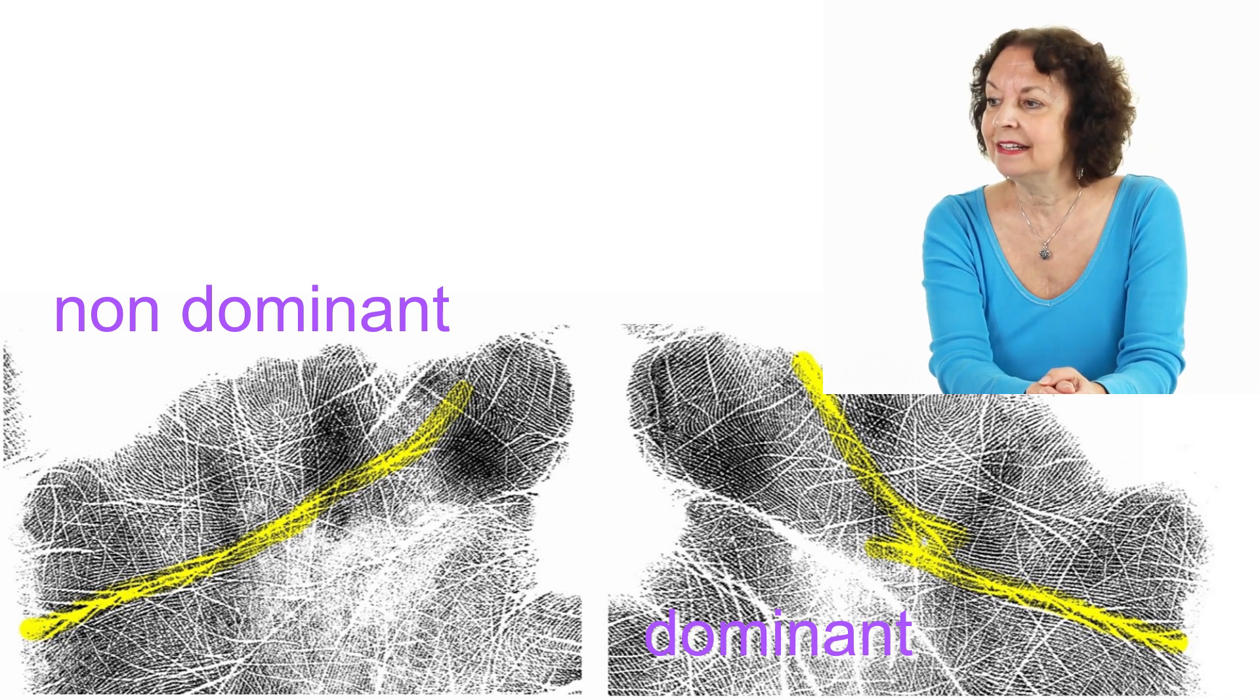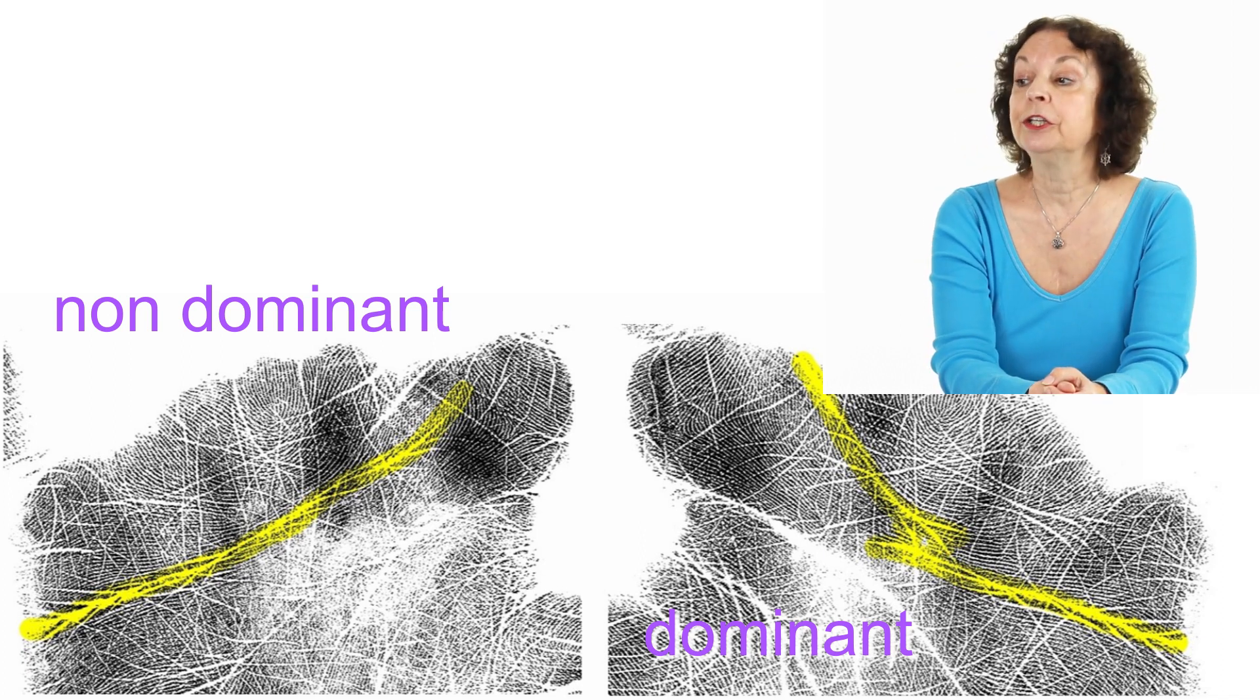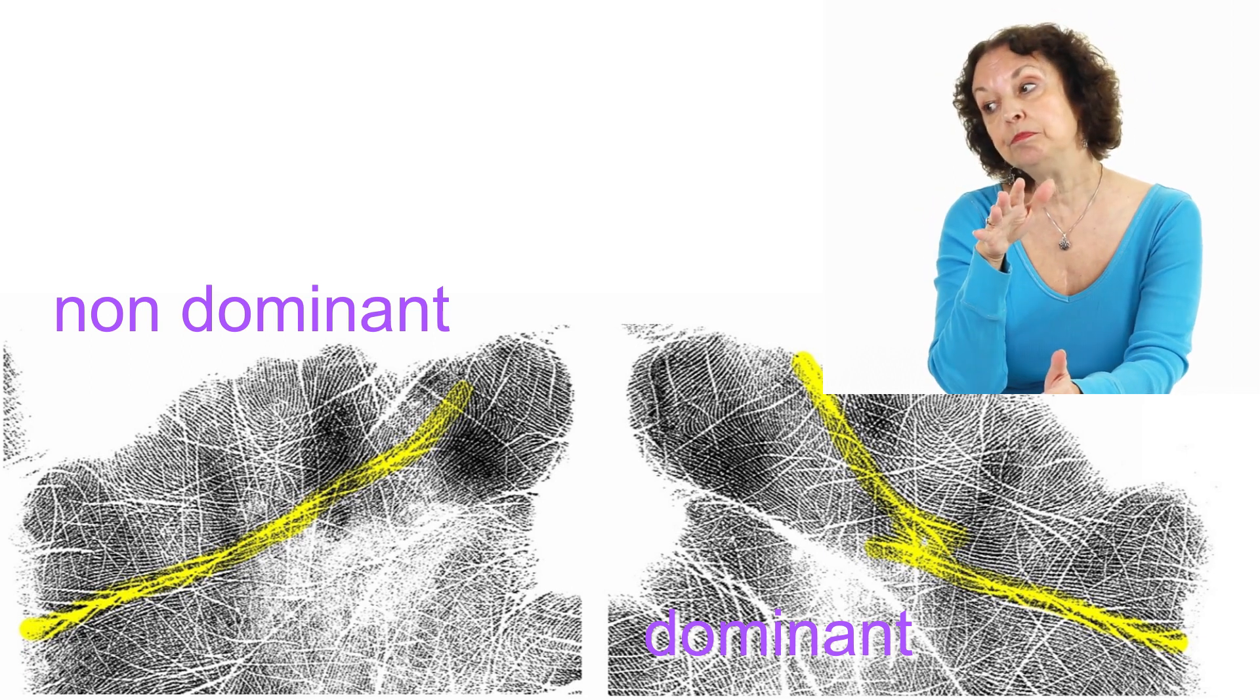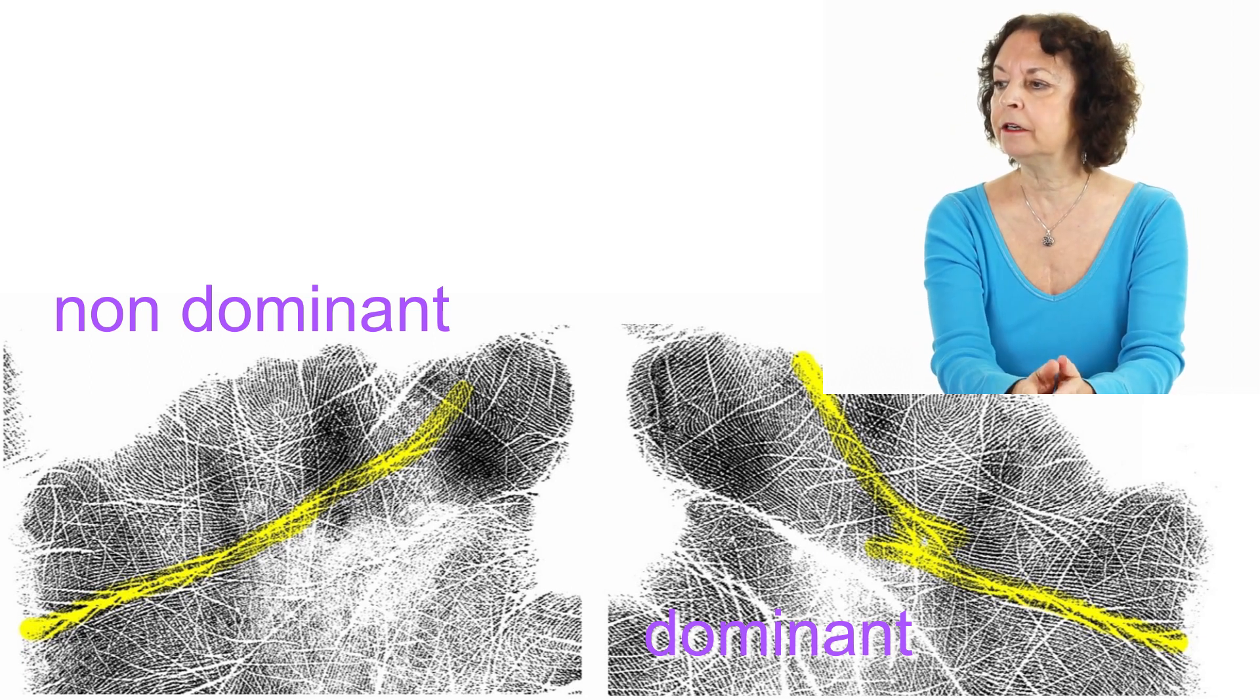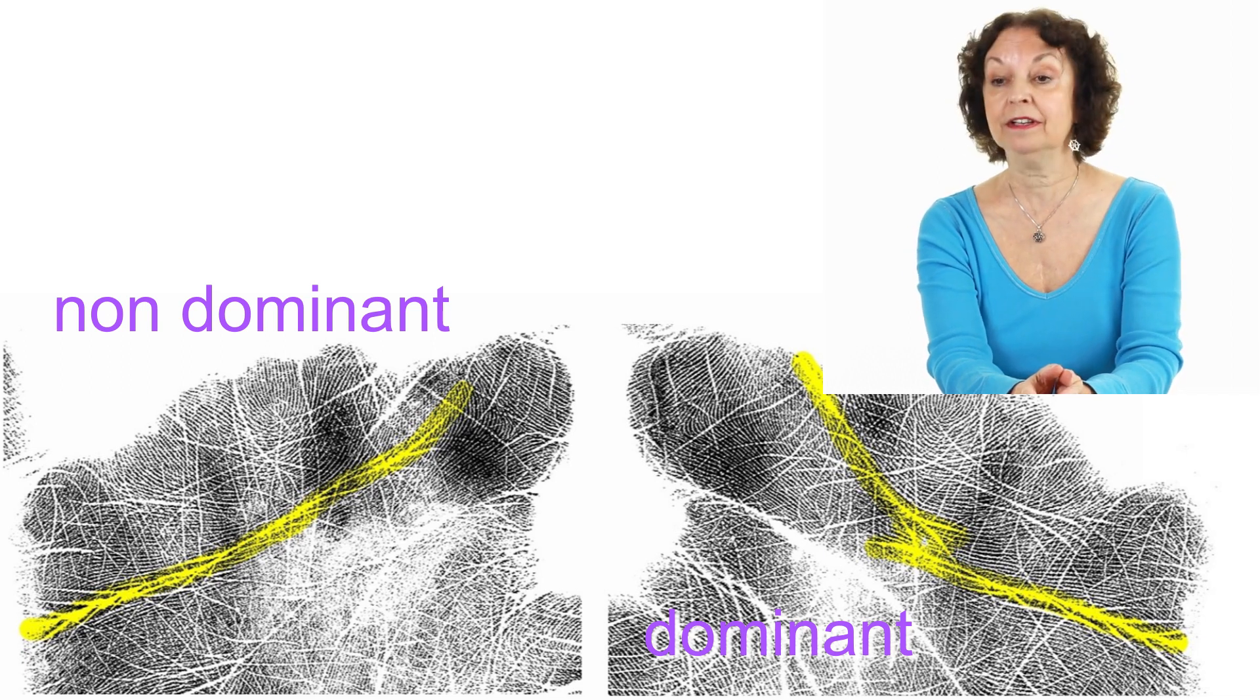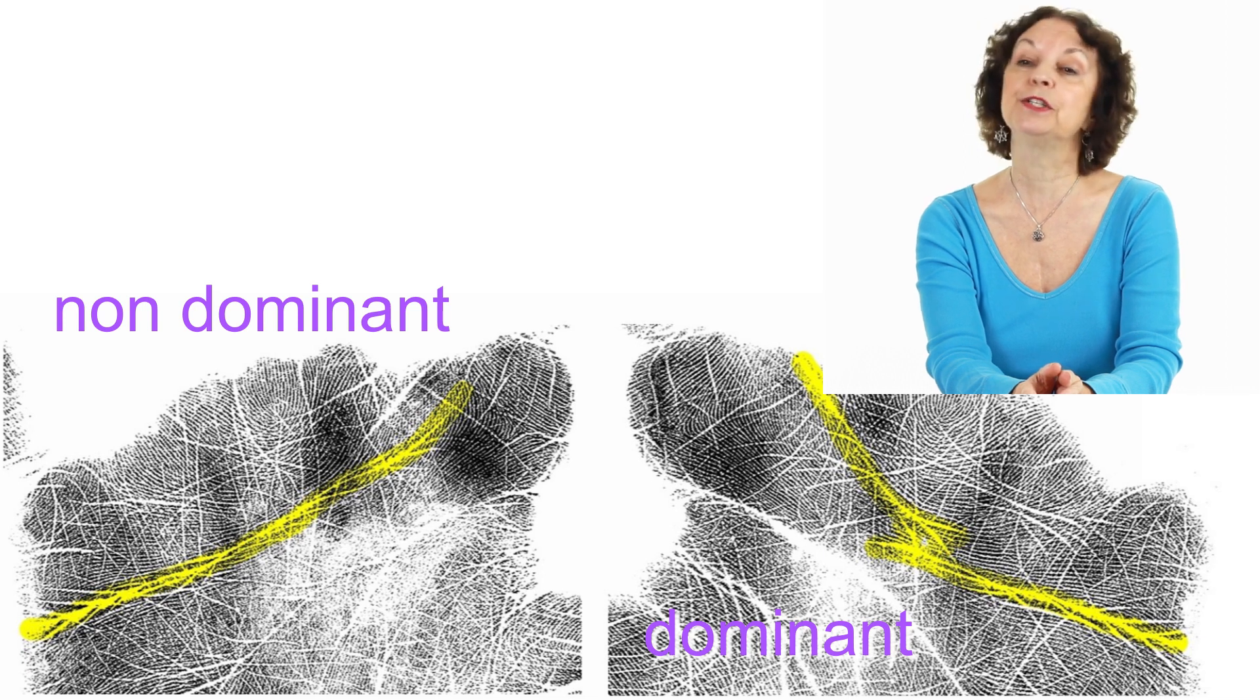In our next example, on the dominant hand, the right hand, you can see that it is medium and it's curved, it's broken, and it's chopped.